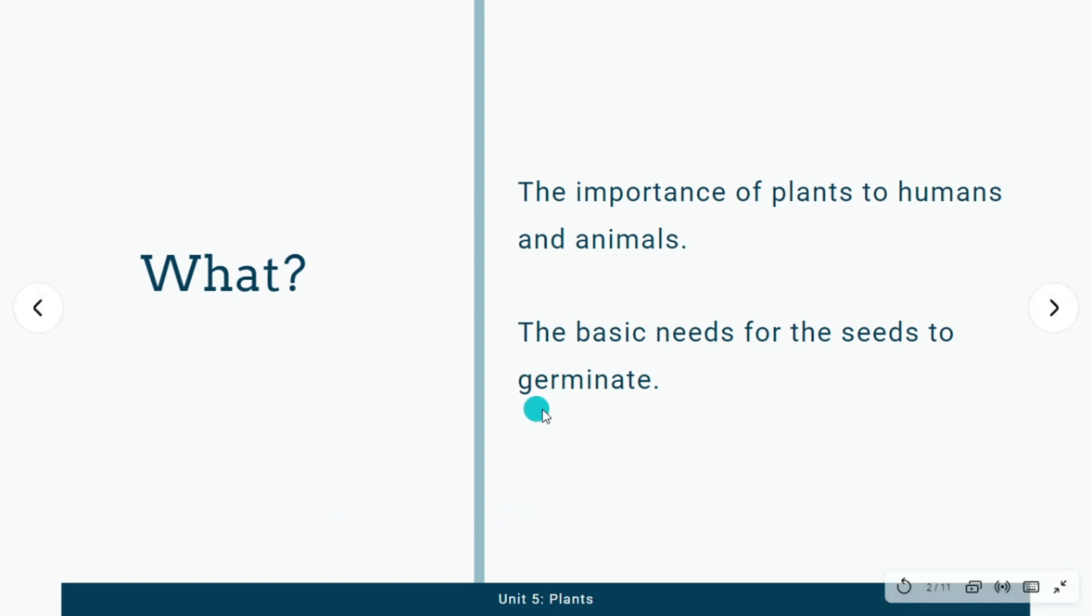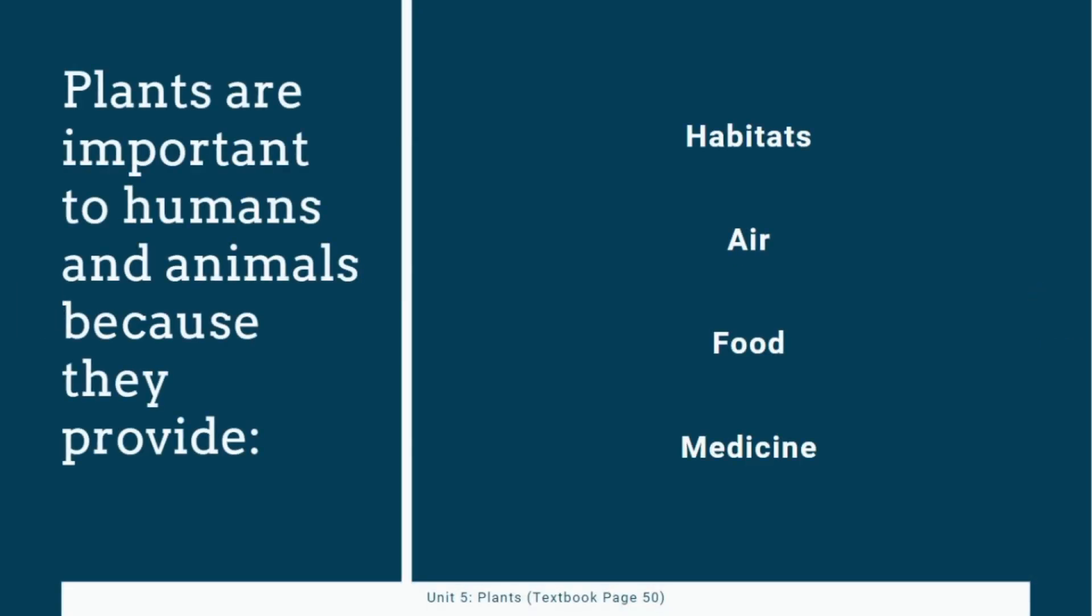You know what does it mean by the word germinate? I will explain this to you later. For the first objective, the importance of plants to humans and animals, in this activity you can refer to your textbook page 50. We know that plants are important to humans and animals because they provide habitats, air, food, and medicine to us. So what is habitats, air, food, and medicines?